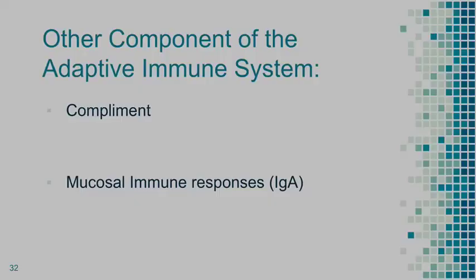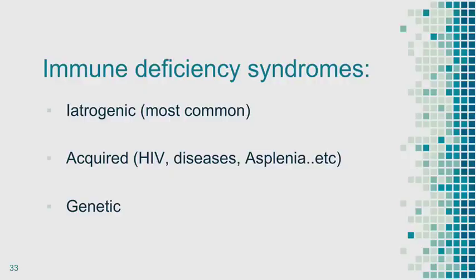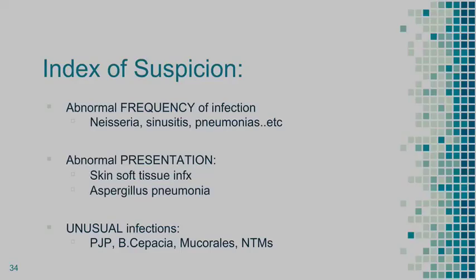Other components of the adaptive immune system include complement and mucosal immune responses. Most commonly, immune deficiencies are iatrogenic — drugs we give patients, transplant, steroids — or acquired through diseases like diabetes, HIV, and asplenia. Then there are genetic immune deficiencies.